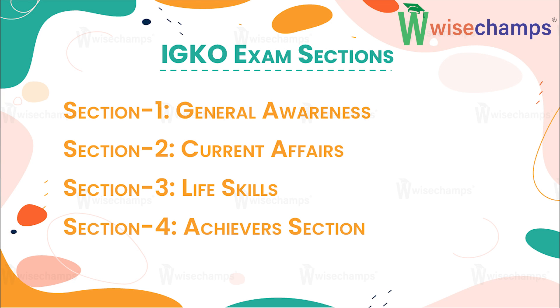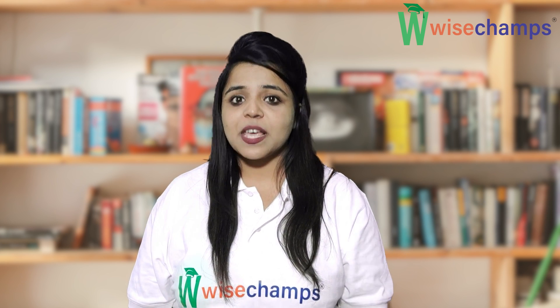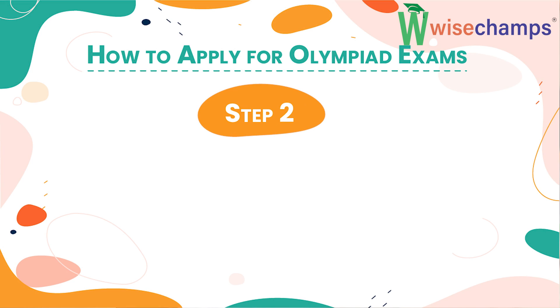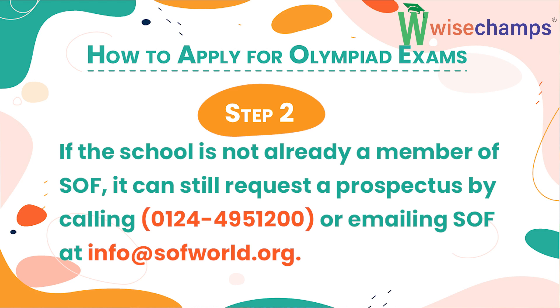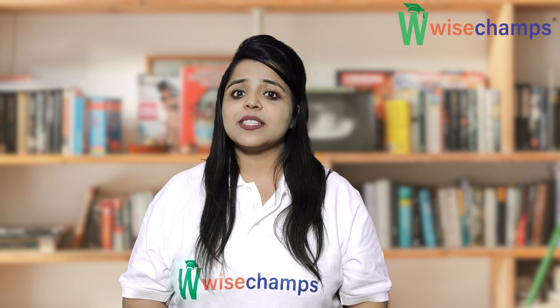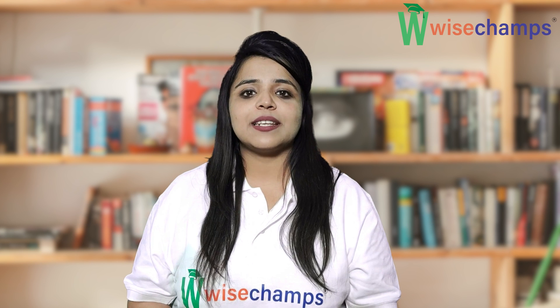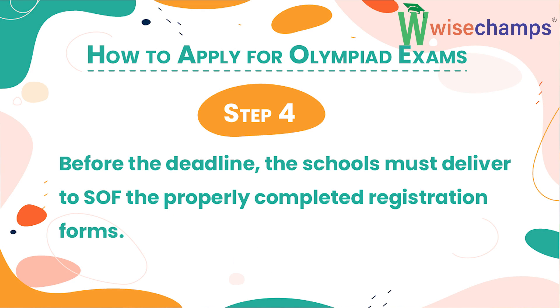Now comes the main part of the video — how to apply for the Olympiad exam in just four steps. First, the registration form and the prospectus will be distributed to the schools that have registered with SOF; students can obtain registration forms from their individual school. Second, if the school is not already a member of SOF, it can still request a prospectus by calling on the given number or email ID. Third, students must complete the registration forms and submit them to their individual schools with the necessary information. Fourth, before the deadline, the schools must deliver the properly completed registration forms to SOF.